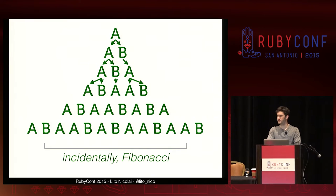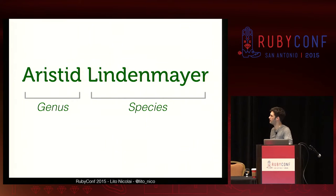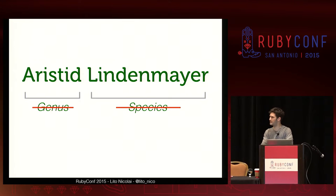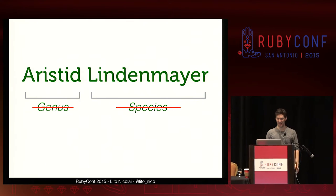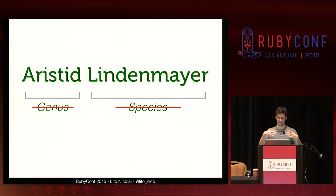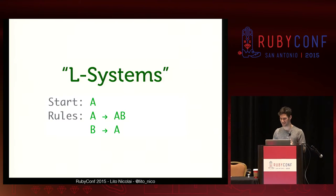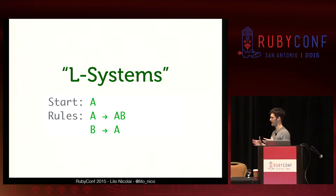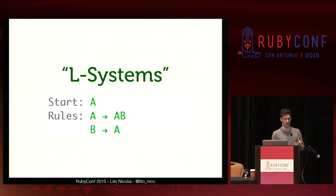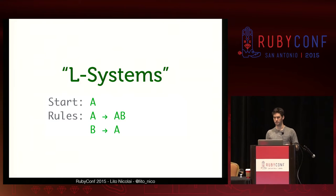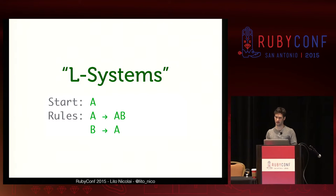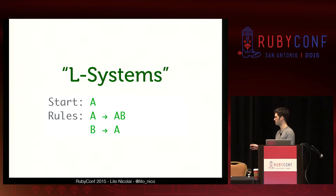This process was first described by Aristid Lindenmeyer, who was a human and not a plant — he was a botanist. He called these systems of generation L-systems, after himself. They're very simple. They consist of a start, like a single alga, and a set of rules, like: one alga becomes an alga and a baby, and a baby grows up into a full-sized alga.